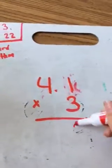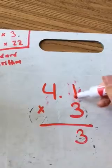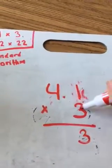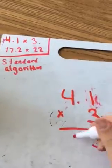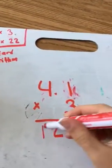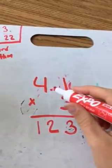3 times 1 is 3, and we know we're multiplying this bottom number by each of our top numbers. So we start with the 1, and then we go to the 4. So 3 times 4 is 12, and I have no other place value, so I just put the 12 down here. I'm left with the number 123, and my next step is to decide where I need to put this decimal.